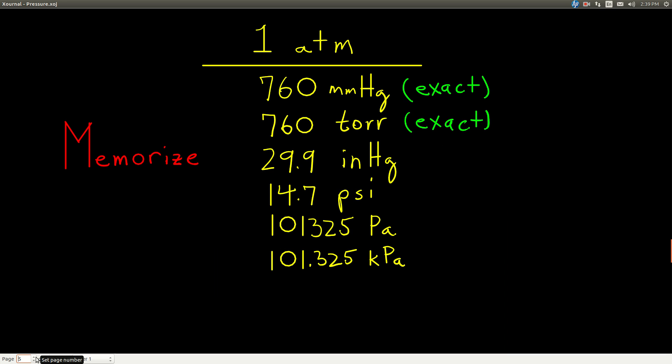The conversion factors, the connections between these units of pressure are given in this table. The way it works is that exactly one atmosphere is equal to each of these things, so each of these are equal to each other. One atmosphere is exactly 760 millimeters of mercury. One atmosphere is exactly 760 torr. So a millimeter of mercury and a torr is exactly the same, just two different names for the same unit of pressure.